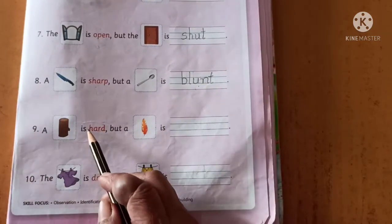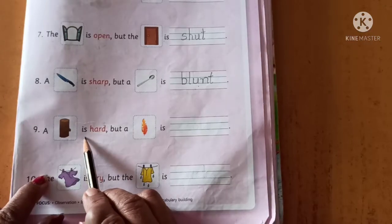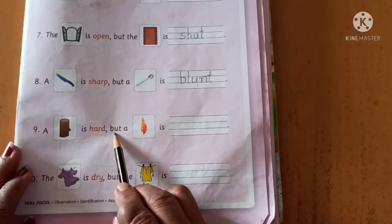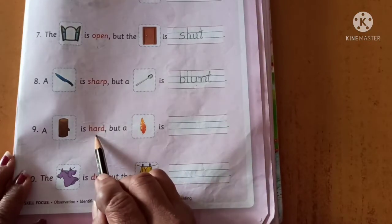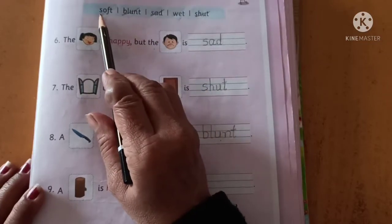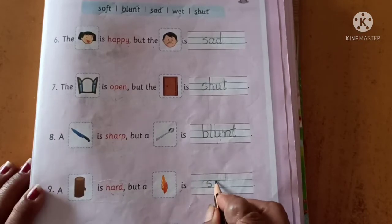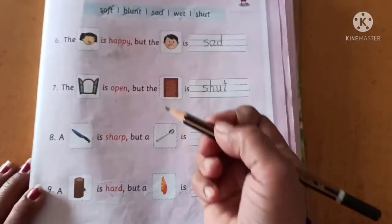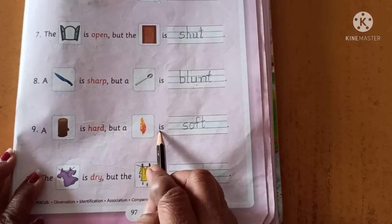Number nine. A log is hard. H, A, R, D — hard. But a feather is ___. Hard का opposite क्या आता है? Soft. S, O, F, T — soft. Find where the word is, then write down here: S, O, F, T — soft. Then cancel it. A log is hard, but a feather is soft.